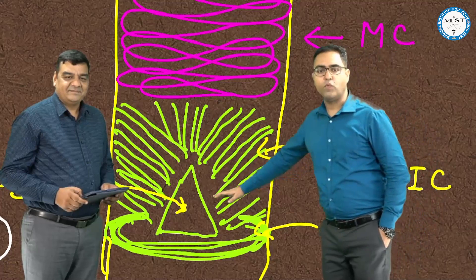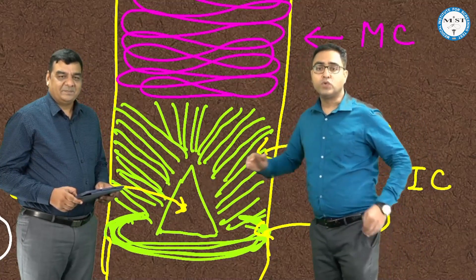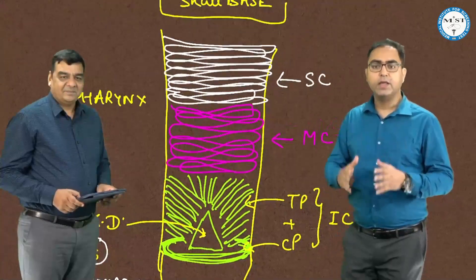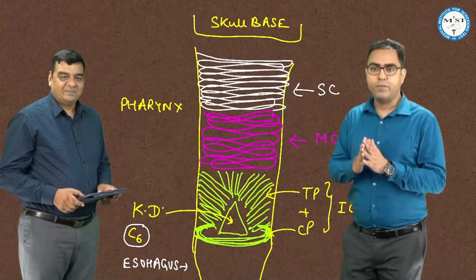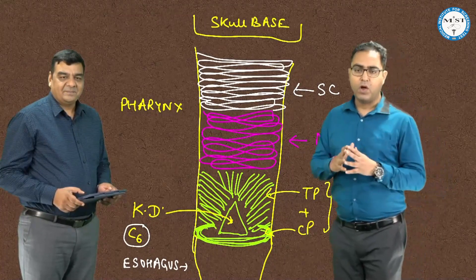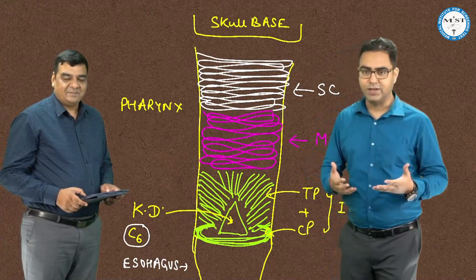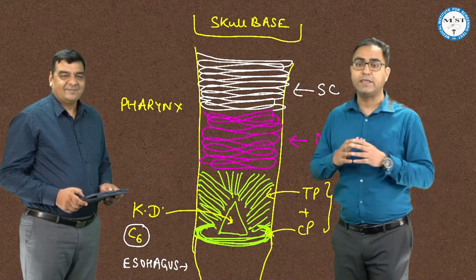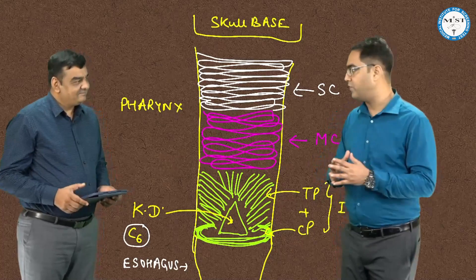But Killian's dehiscence specifically lies between the thyropharyngeus and the cricopharyngeus parts of the inferior constrictor muscle. As you can see, it is a weak area — there is no muscular support to it. So it is a possible site of perforation during rigid endoscopic procedures. Like if I am doing rigid pharyngoscopy, I must be careful of not putting too much pressure in this area. That is why Killian's dehiscence is also called the 'gateway of tears.'